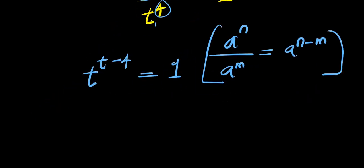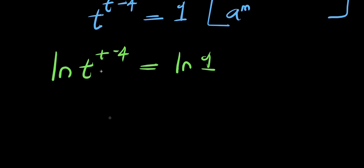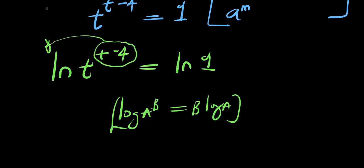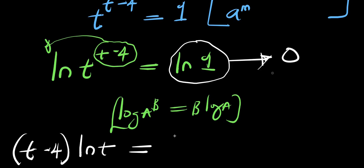So you can solve this by applying natural log. You have ln of t power t minus 4 equals ln of 1. Applying the log power rule, the exponent t minus 4 comes in front: t minus 4 times natural log of t equals natural log of 1. It is important to know that the natural log of 1 is 0, so whenever you see natural log of 1, know that it is 0.